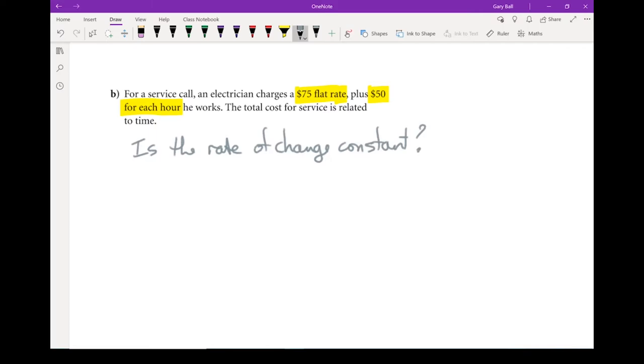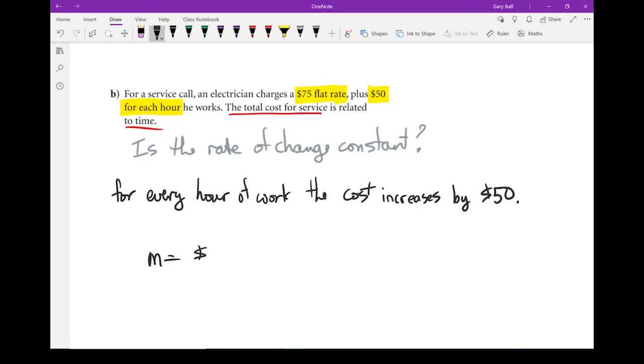We have to take a look at this. We are comparing the total cost of service to time. So we're looking at cost as a function of time. So for every hour of work, the cost increases by $50. That's my rate of change. M equals $50 per hour. So if I've got a constant rate of change, it is a linear relation.